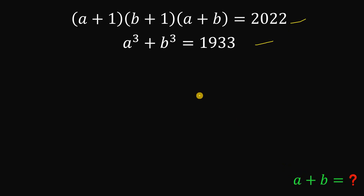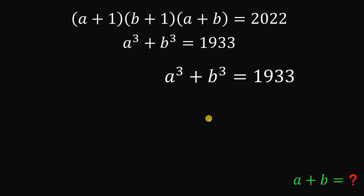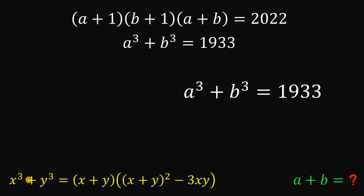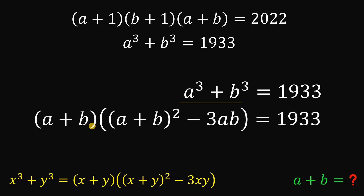First, let's work with the second equation. Recall we have an identity for the sum of two cubes: x³ + y³ = (x+y)(x²+y² - 3xy), which can also be written as (x+y)((x+y)² - 3xy). So a³ + b³ factors as (a+b)((a+b)² - 3ab).